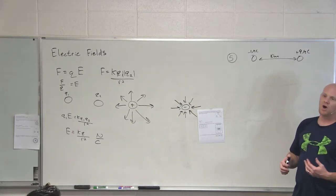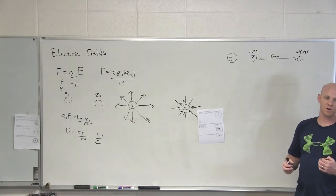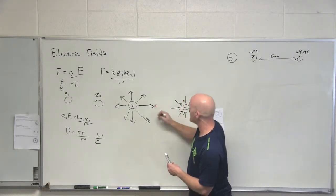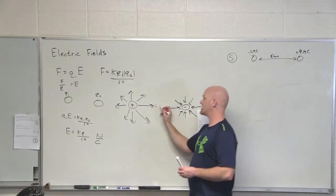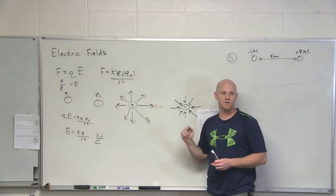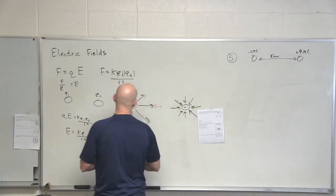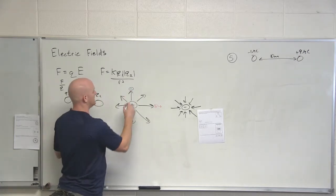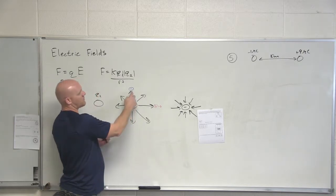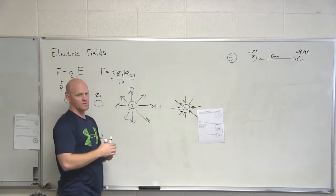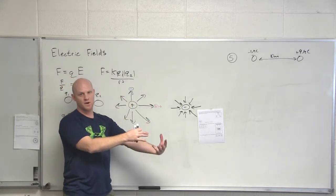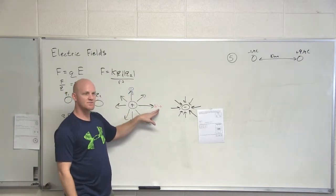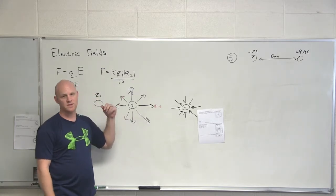One thing to note: the electric field lines always point the direction a positive test charge would feel the force. If I put a tiny positive test charge next to the negative one microcoulomb charge, it would feel attraction — a force to the right, the same direction as the electric field. However, if I put a negative charge there, it would feel attraction in the opposite direction. The electric field is defined relative to a positive charge, but for negative charges the force is exactly opposite the electric field direction.